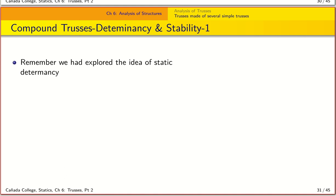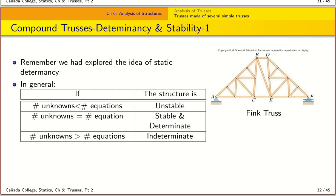So now let's look at this idea of determinancy and stability in a compound truss. Remember we had explored this idea before in the context of rigid bodies, and we had come up with a table that allows us to relate when a structure is stable or unstable based on the relationship between the number of unknowns we have and the number of equilibrium equations.